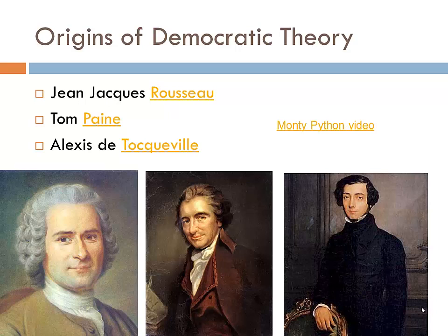Alexei de Tocqueville, writing in the 19th century after observing life in the United States, began to talk about the importance of civil society and the development of civil society groups — churches and other types of civil society organizations — as part of the growth of democracy. He was also very strong on the importance of tolerance and acceptance of other people's views.